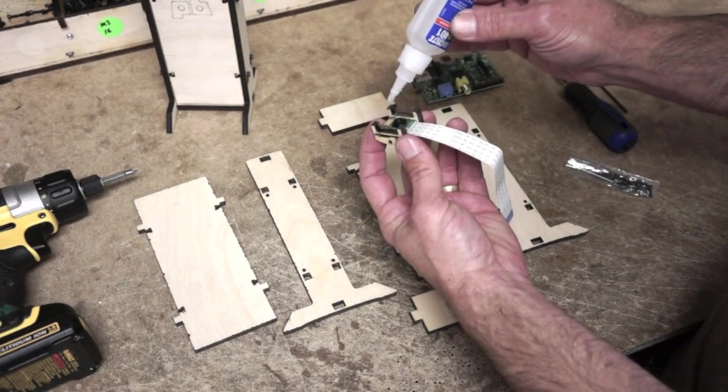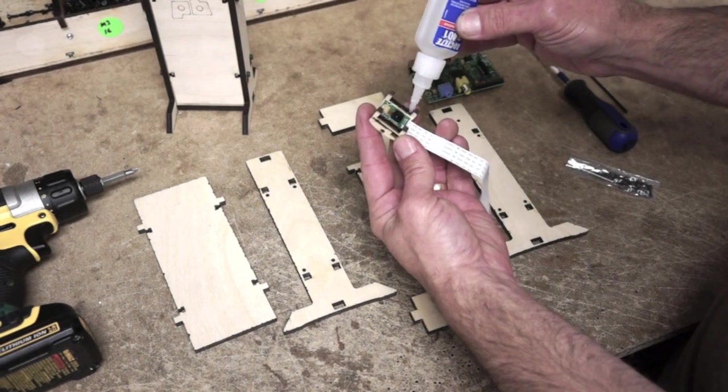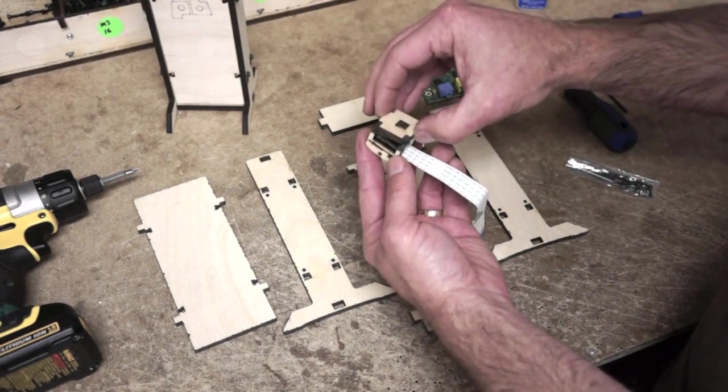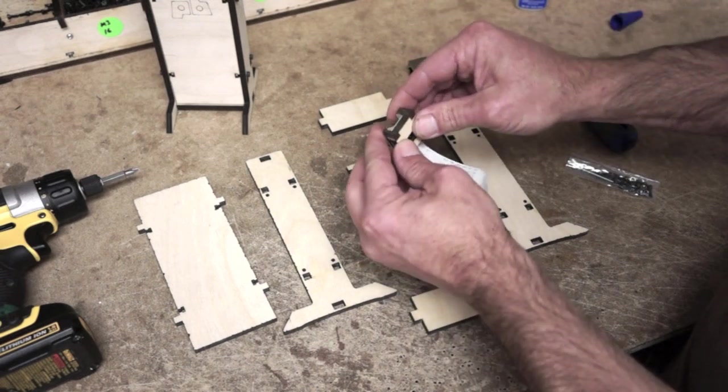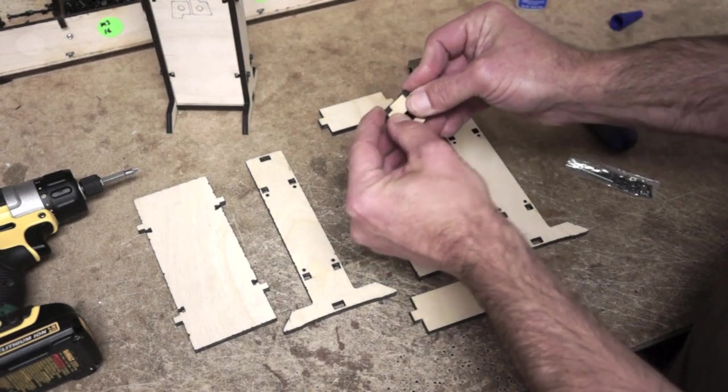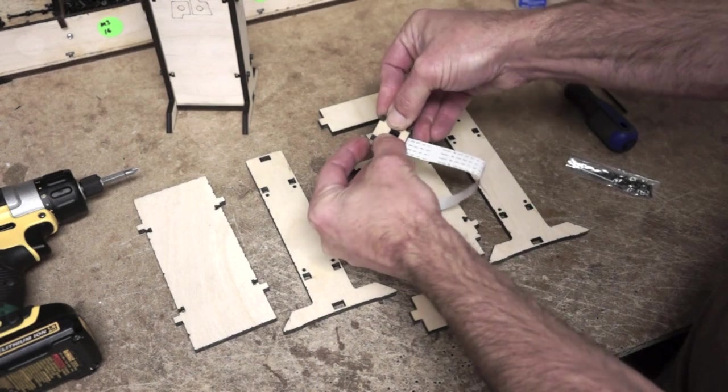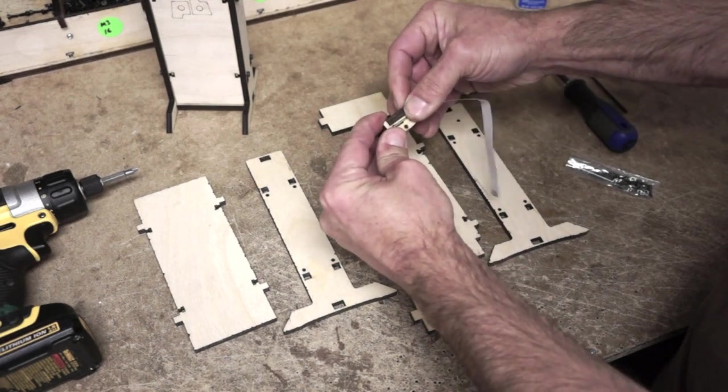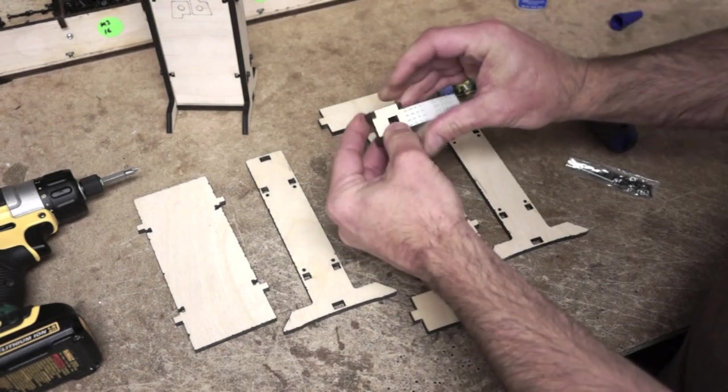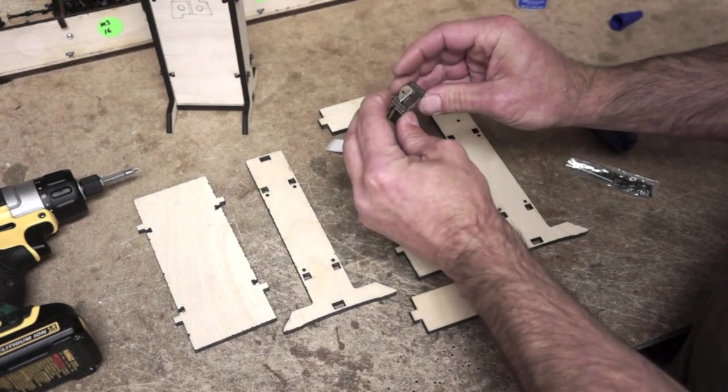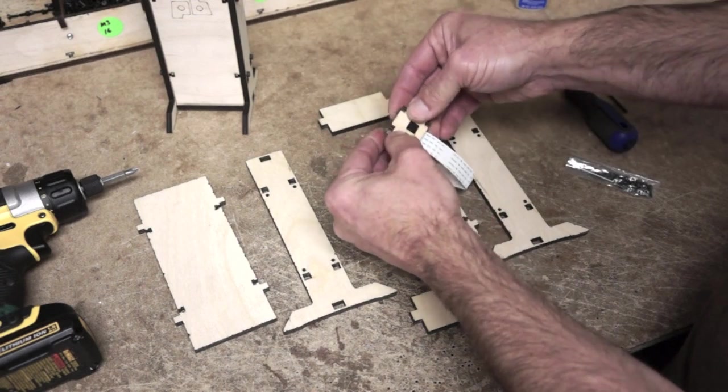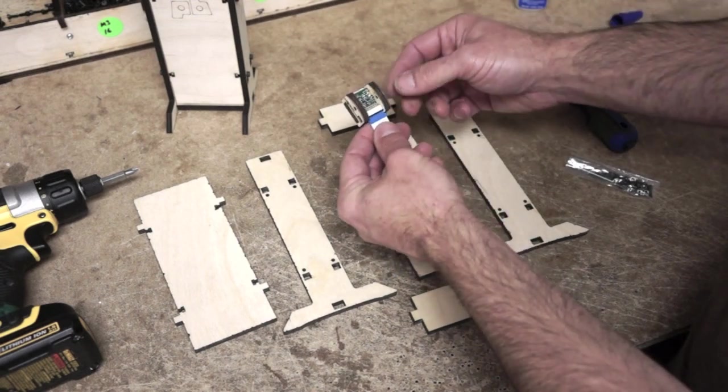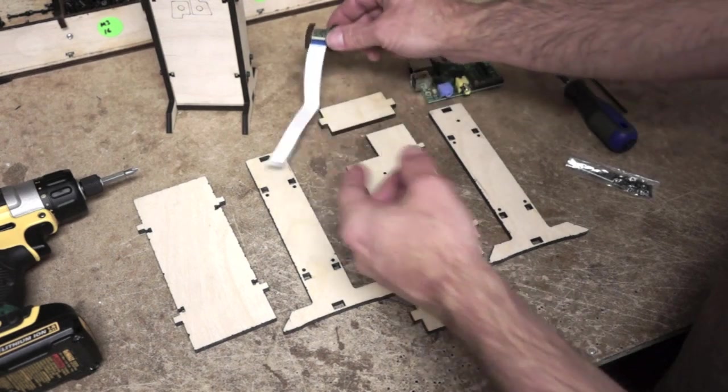This is super glue. Loctite brand but you can use something else. Then you got like one shot to get this right. I like to hold the sides in and hold it down. It usually sets up in about 10 seconds. Some people like that to dry before they move on but I don't. I just keep rolling because it actually cures really quickly. So that's going to be our camera. We're going to set that aside for later.